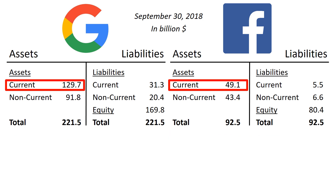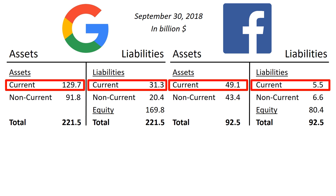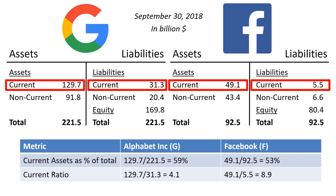A useful metric to calculate to evaluate a company's short-term liquidity is the current ratio. The current ratio is simply current assets divided by current liabilities. Alphabet Inc's current ratio is 4.1, Facebook's current ratio is 8.9. These are very high numbers, compared to a group of 25 Dow Jones Industrial Average companies recently reviewed, that have a current ratio of 1.4. In short, the liquidity of both Alphabet Inc and Facebook is very high.